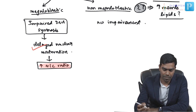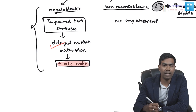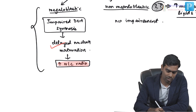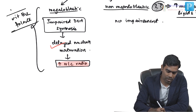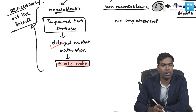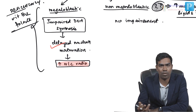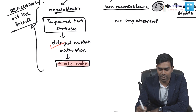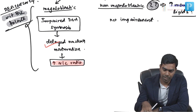The classic examples of megaloblastic macrocytosis are vitamin B12 and folate deficiencies. Even though there are many other causes like myelodysplastic syndromes, traditionally B12 and folate deficiency are the classic examples of megaloblastic macrocytosis.